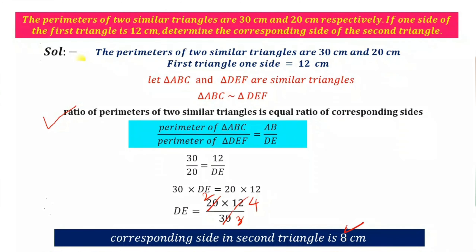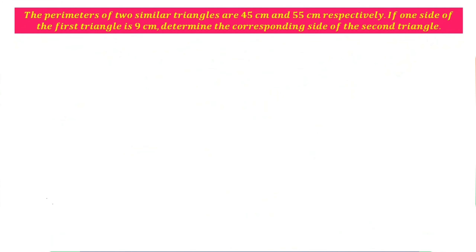Next question. Second question: The perimeters of two similar triangles are 45 cm and 55 cm respectively. If one side of the first triangle is 9 cm, determine the corresponding side of the second triangle. Two similar triangles' perimeters are given — one is 45 cm, the second is 55 cm. One side of the first triangle is 9 cm.